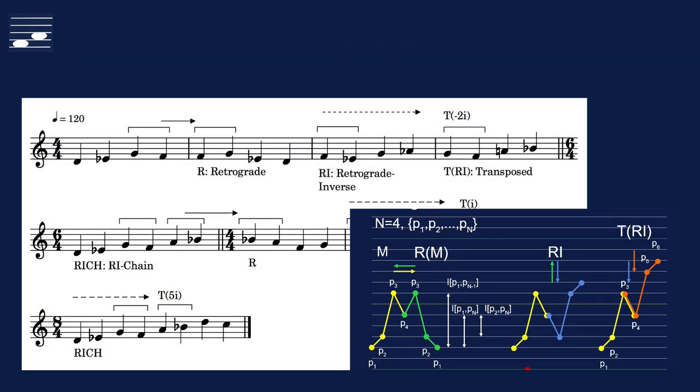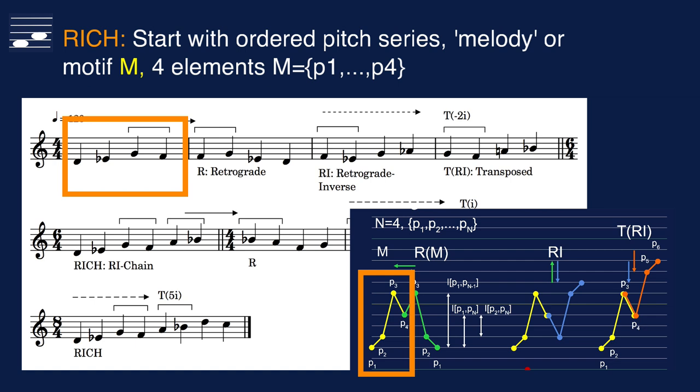So what is a retrograde inversion chain? It's a pitch domain technique that we apply to a given motif or melody, an ordered series of pitches, as shown here for an example with 4 notes in staff notation and in diagram. The goal is to create a chain of the original melody and a modified version in such a way that the last 2 notes will overlap.